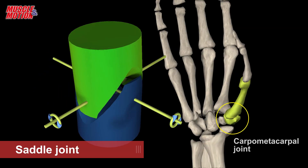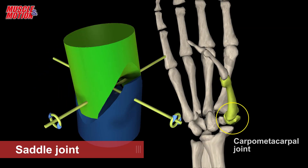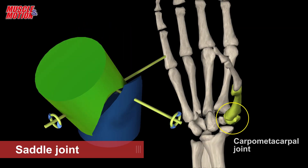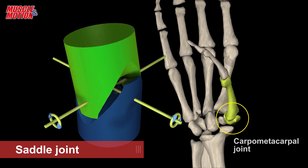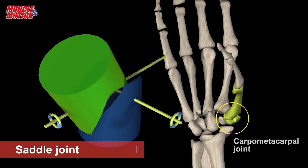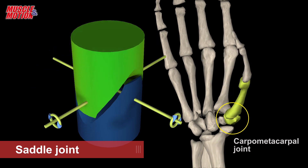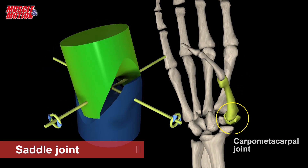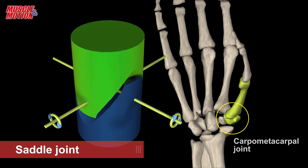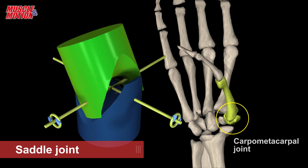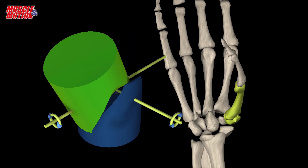Saddle. Named due to its resemblance to a saddle on a horse's back. It is characterized by opposing articular surfaces with a reciprocal concave convex shape. For example, the carpal metacarpal joints.